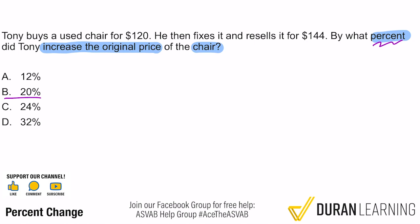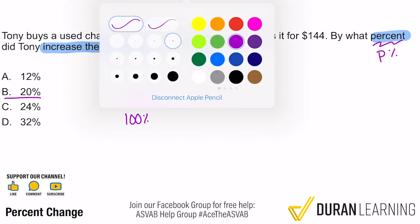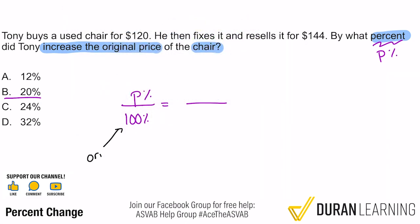If we want to know by how much he increased the price in terms of a percent, we set up a proportion. The percent we're looking for, we'll call that P percent. And remember, percents are always out of 100. So we have P over 100 — because 100 percent represents the original percent, and P percent represents the percent increase.